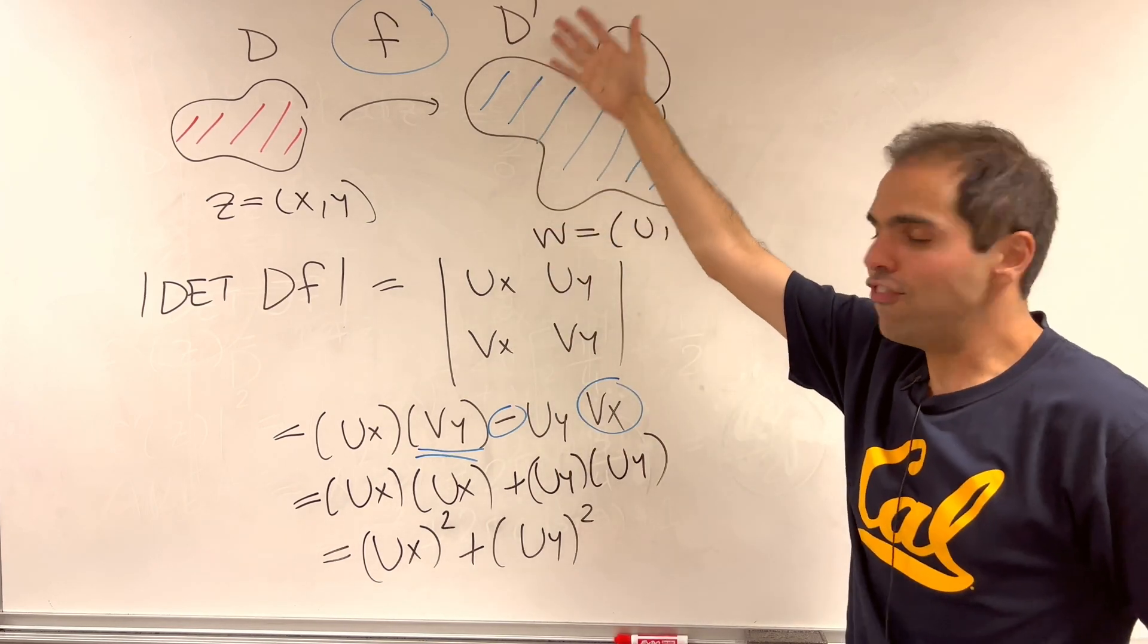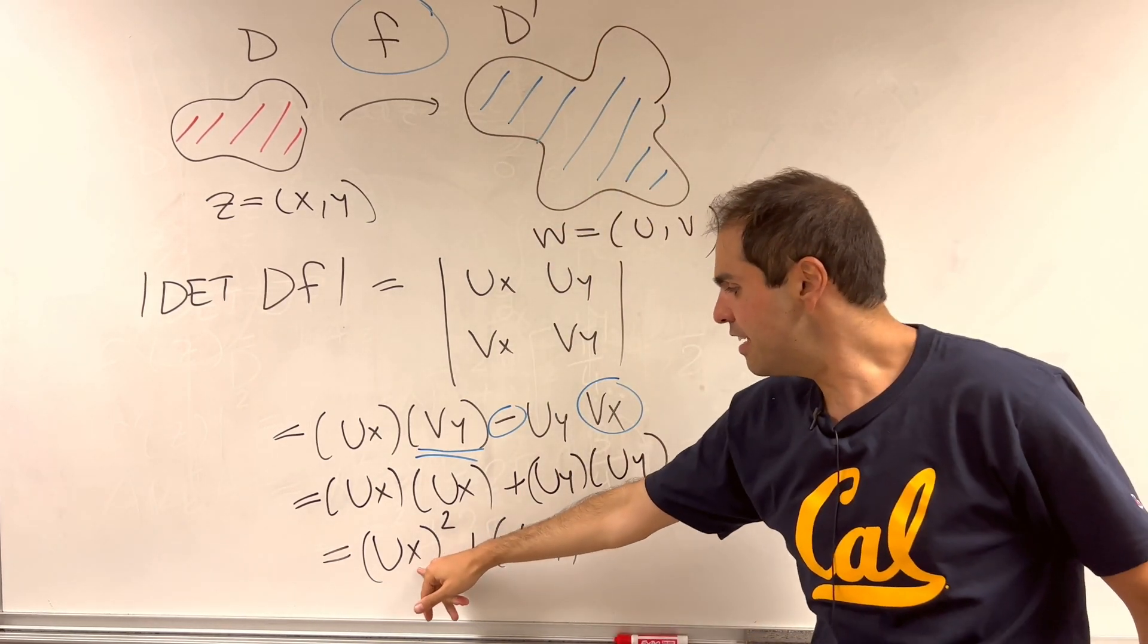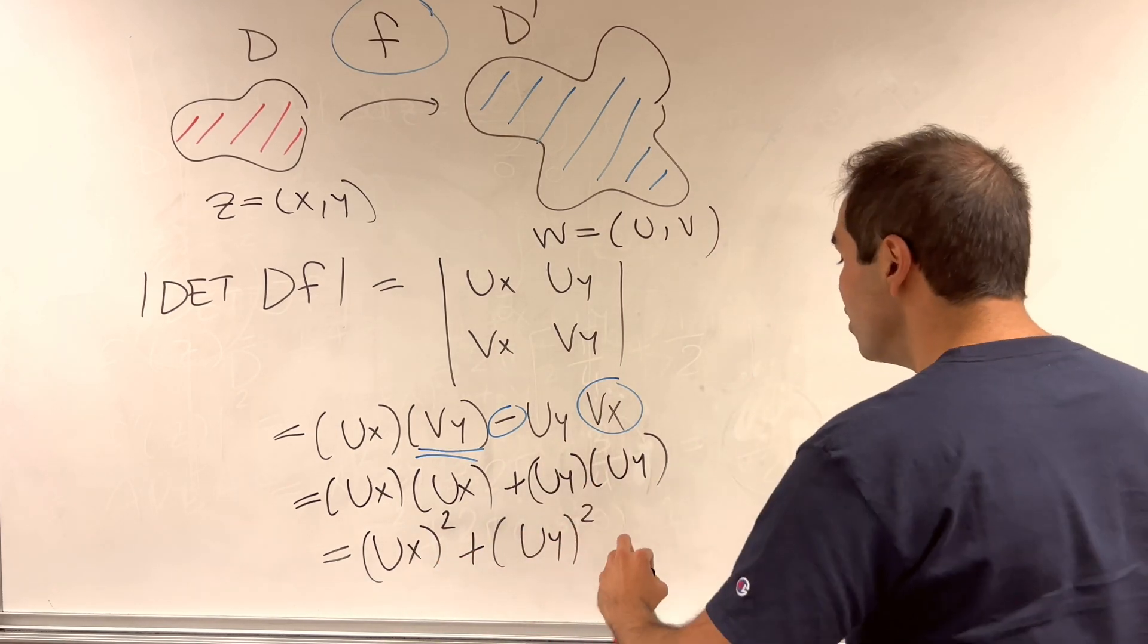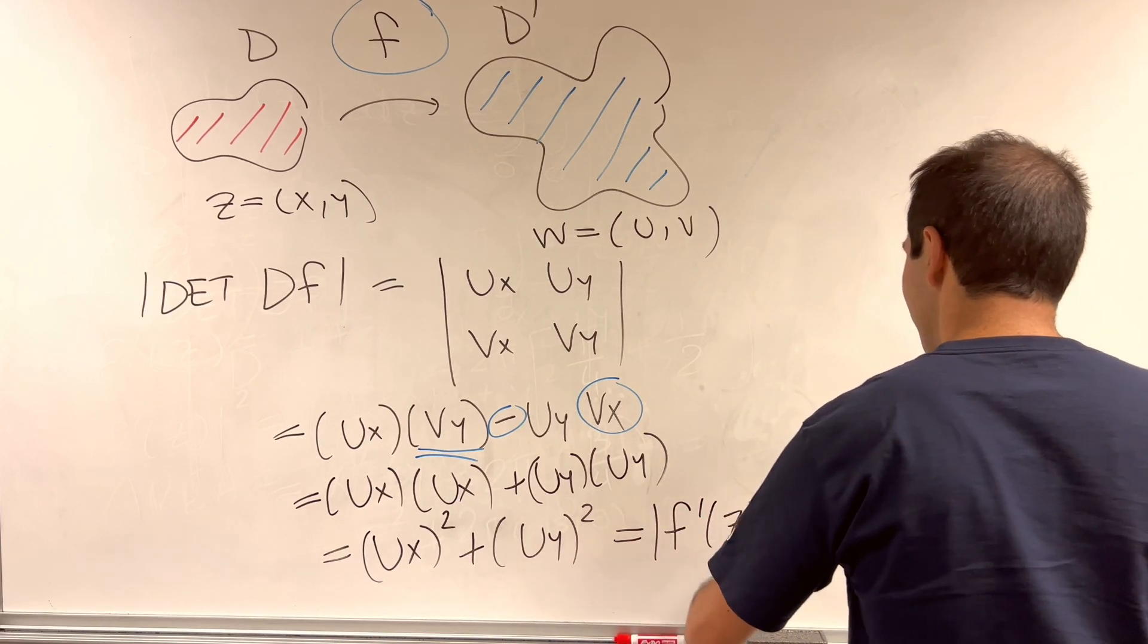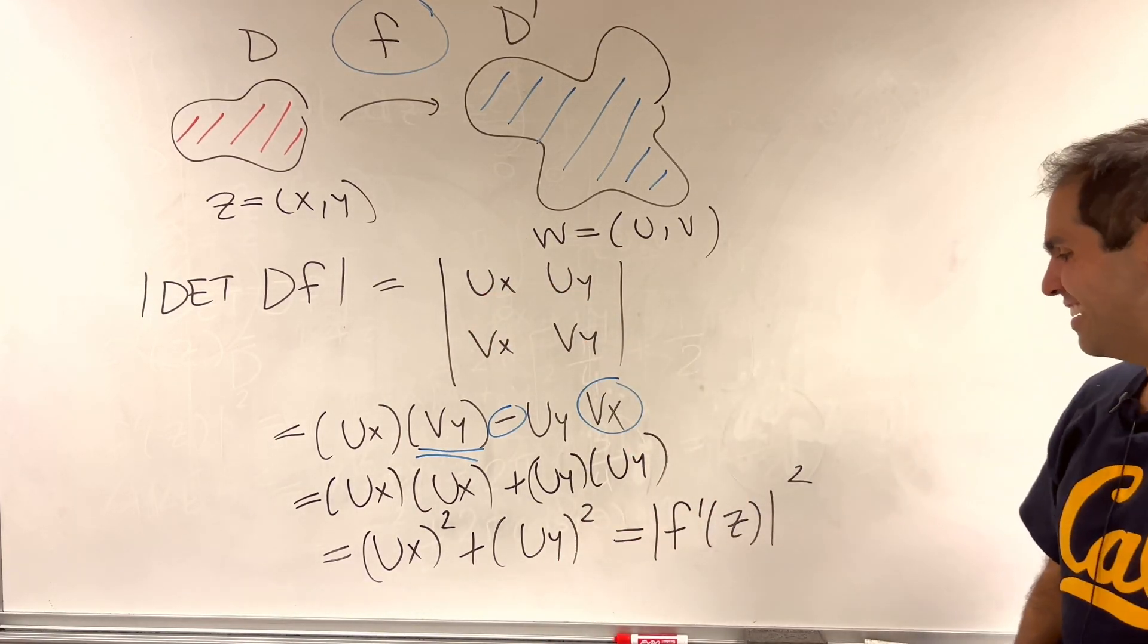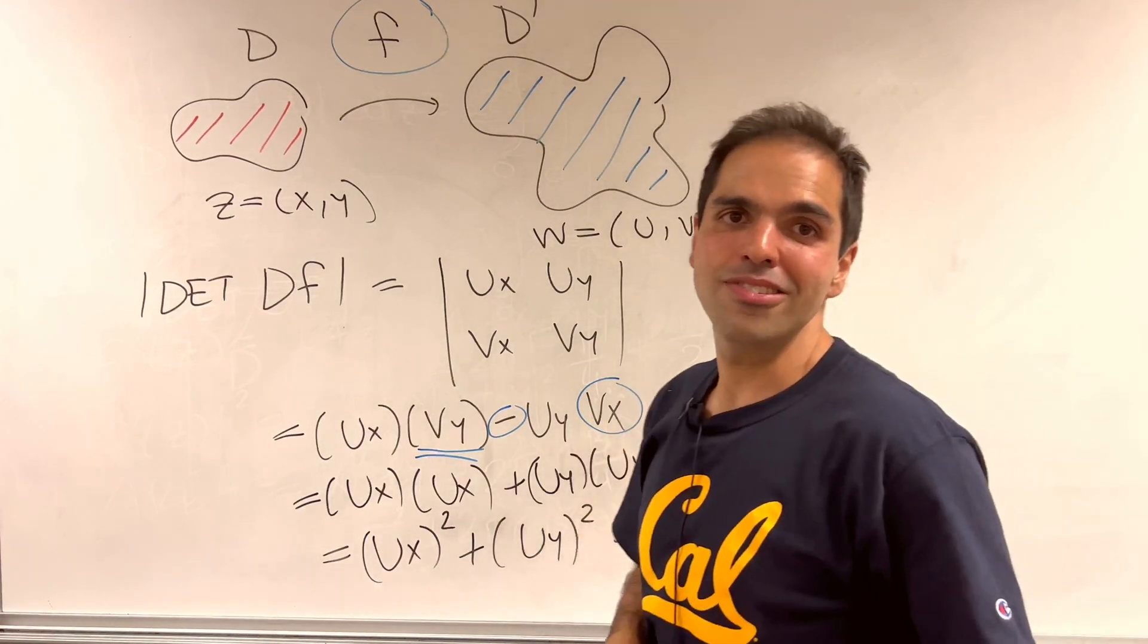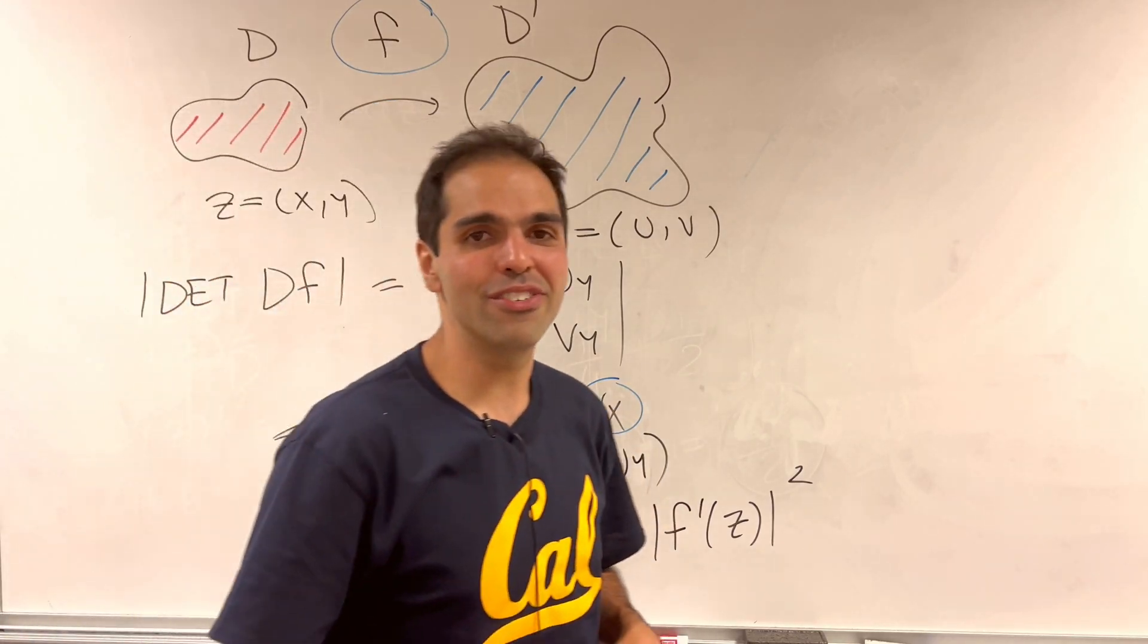But if a function is complex differentiable, then in fact, this is just another way of writing the derivative squared. So absolute value of f prime of z squared. I think just if you take the derivative with respect to the real line or something. And therefore, this is the Jacobian, so a formula is valid. And we were able to calculate the area of a Neumann oval.